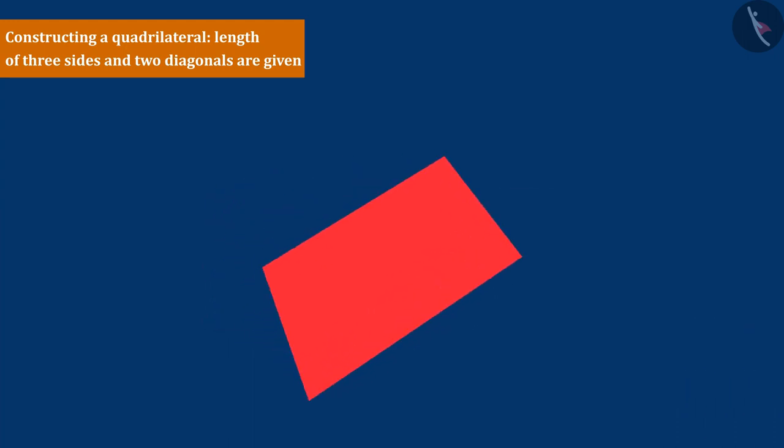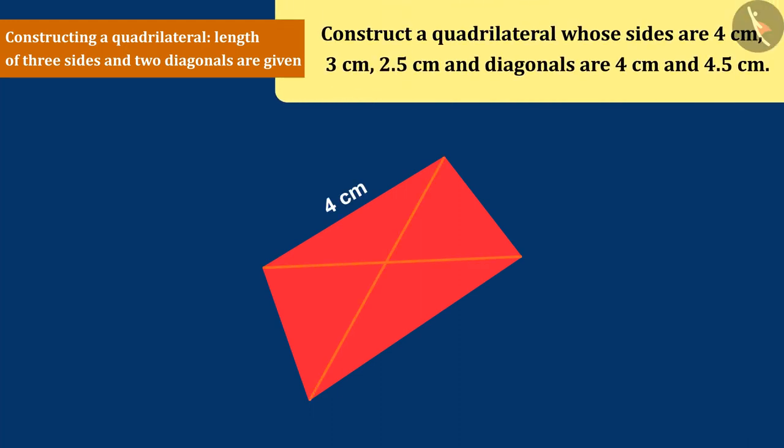The teacher tells Arav that the length of the three sides of the quadrilateral required to make an ear is 4 cm, 3 cm, 2.5 cm, and the length of its two diagonals should be 4 cm and 4.5 cm.